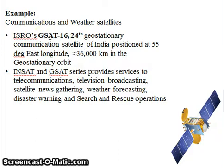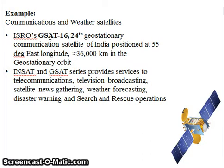G-SAT 16 is the 24th geostationary communication satellite of ISRO, positioned at 55 degrees east longitude, about 36,000 kilometers in the geostationary orbit. This is the latest satellite that was launched on 7th December 2014.